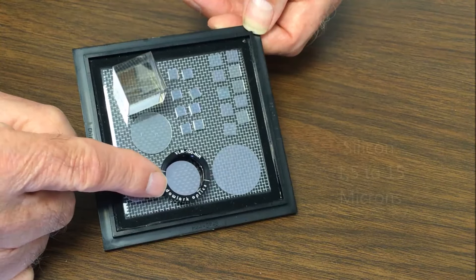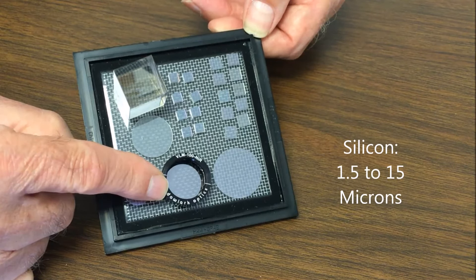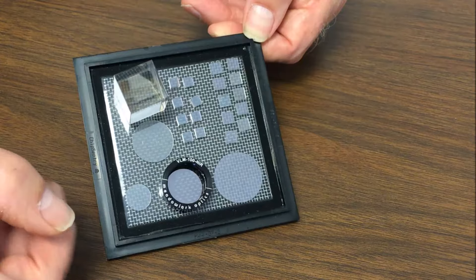We also have them on silicon substrate, the wires. In that case, these can be used out to wavelengths of 15 microns, typically from about 1.5 to 15 microns.